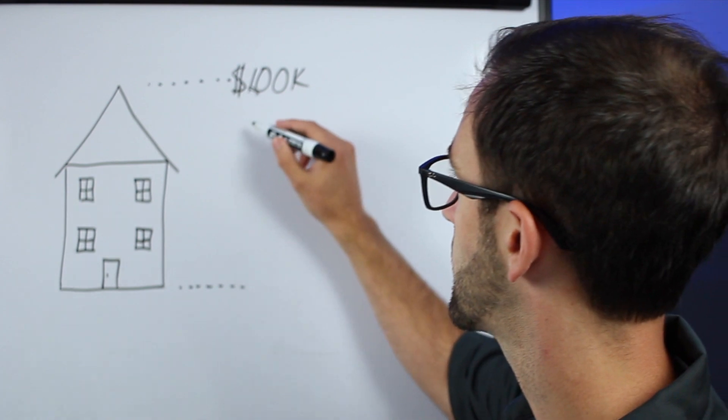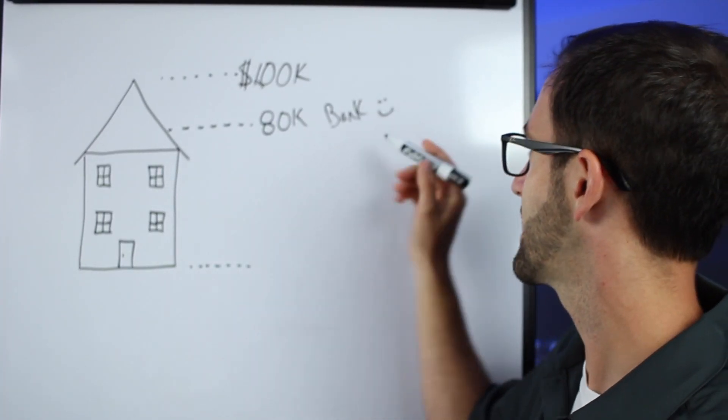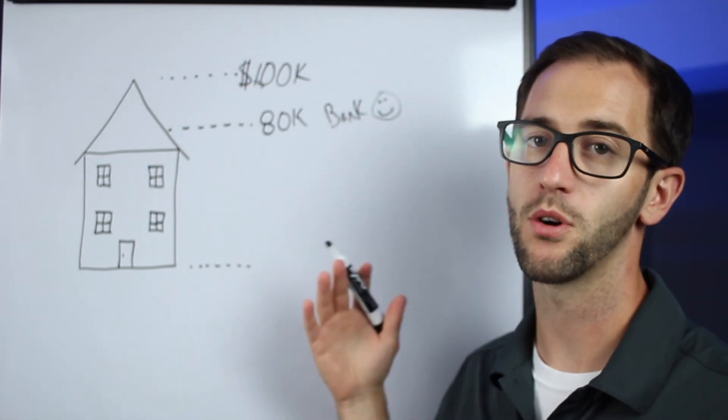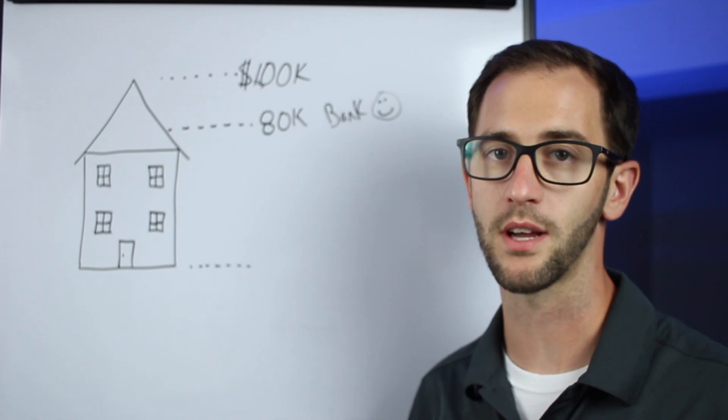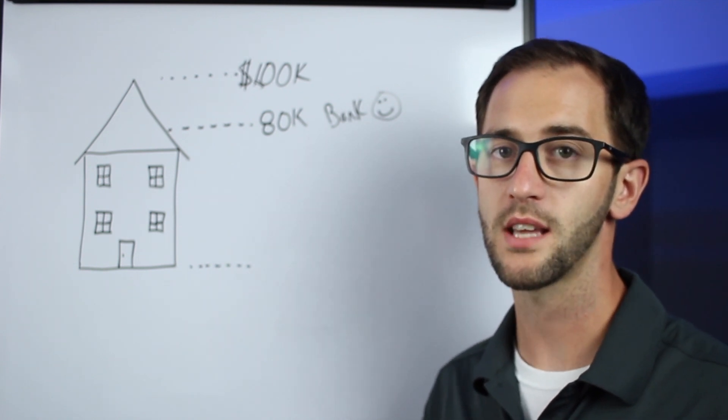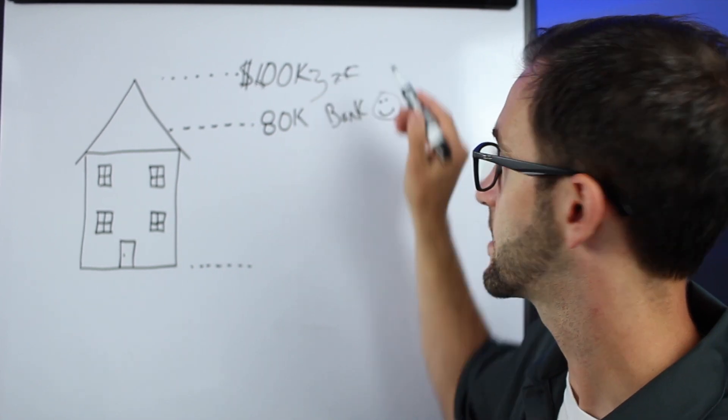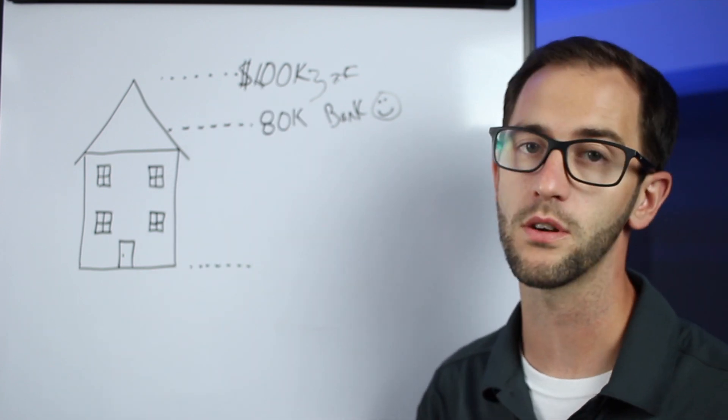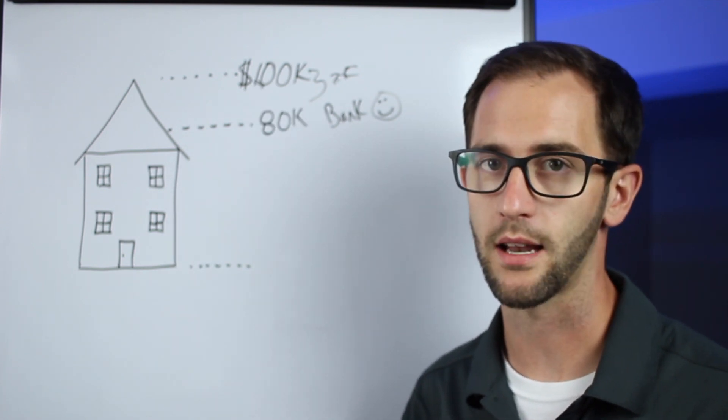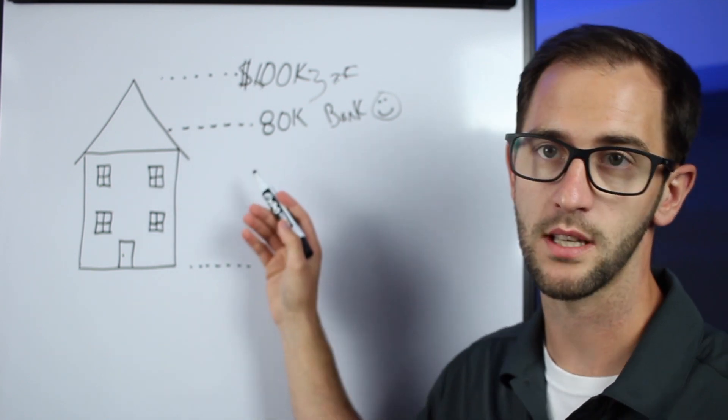So at eighty thousand dollars the bank is happy, they're able to go up to that eighty thousand dollars and feel good, check all the boxes and feel like they have an adequate safety net. This twenty thousand dollars here, that's their safety net if they had to foreclose. If they owe eighty they could sell it for a hundred and get back out of that. So the bank is happy at eighty thousand dollars against this house.